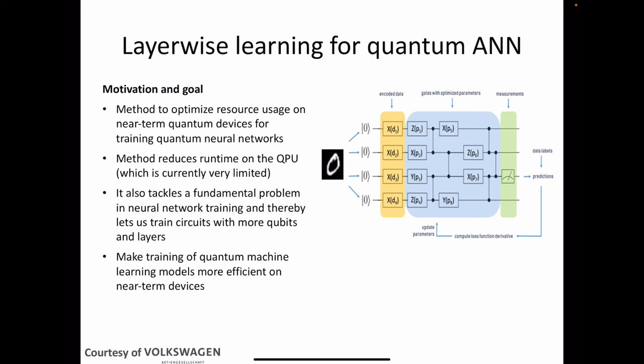Another example is layerwise learning for quantum artificial neural networks, published together with Google. The motivation was to optimize resource usage on near-term quantum devices for training quantum neural networks — because the number of qubits available is very limited. The method reduces runtime on the quantum processing unit and tackles a fundamental problem in neural network training — it lets us train circuits with more qubits and layers. This is one of the most interesting research directions for using near-term quantum devices in machine learning.